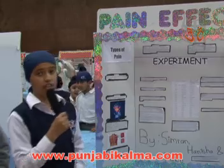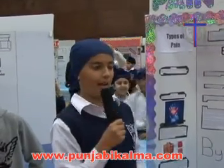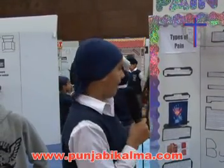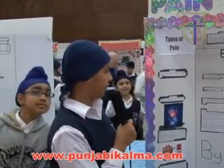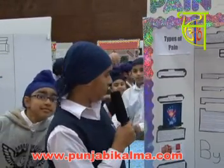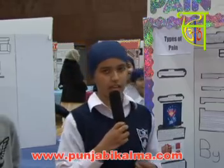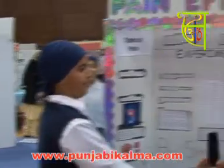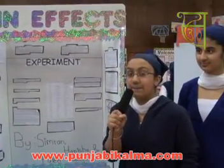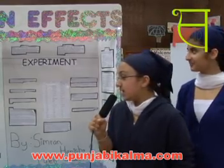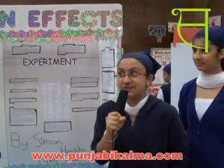Acupain is severe and lasts a relatively short time. Chronic pain may range from mild to severe and it is presented to some degree for long periods of time. Nerve pain can happen with dysfunction of the nerves. Tissue pain can happen with dysfunction of the tissues.